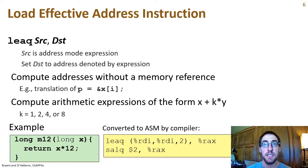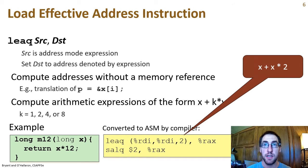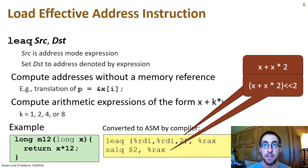For example, this simple C function returns 12 times its input argument. In assembly, this can be implemented by using LEAQ to first multiply the input argument by 3, since RDI plus RDI times 2 is RDI times 3. Then the shift arithmetic left on the intermediate value by 2 is equivalent to a multiplication by 4, because shifting left by n is equivalent to multiplying by 2 to the n.